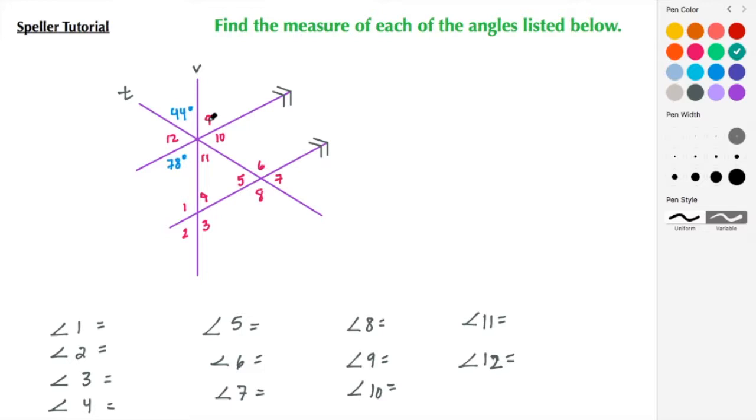We have vertical angles with 78 degrees and 9, so I know that angle 9 is also 78 degrees. So let's put 78 degrees here and also put it down here. We also know that angle 44 and angle 11 are also vertical, so this here is also 44 degrees and angle 11 is 44 degrees.